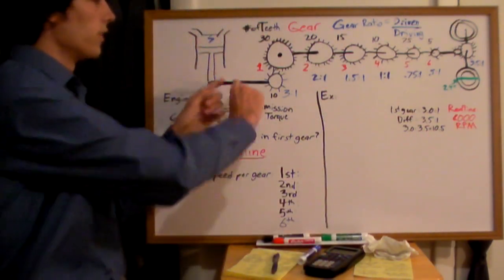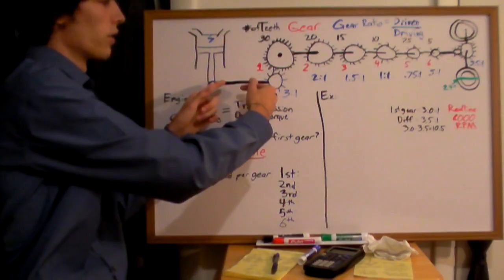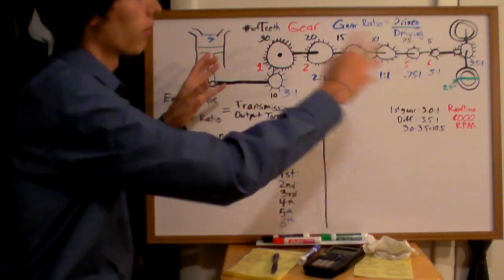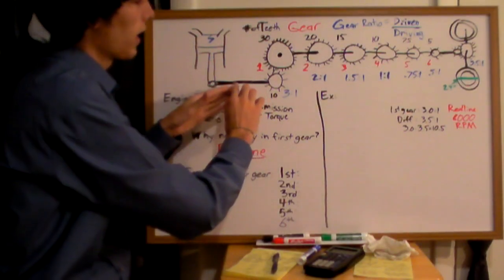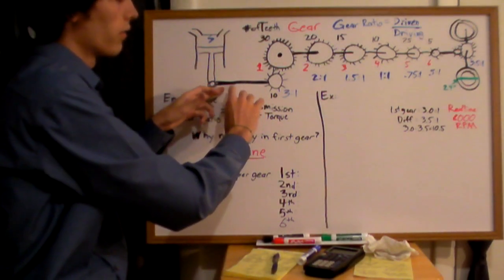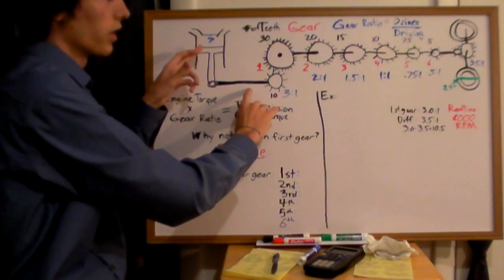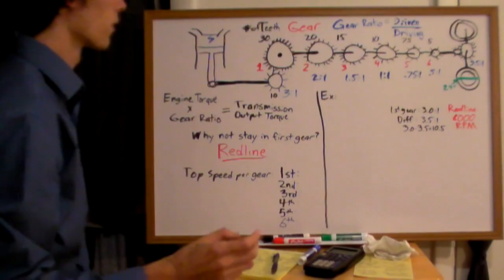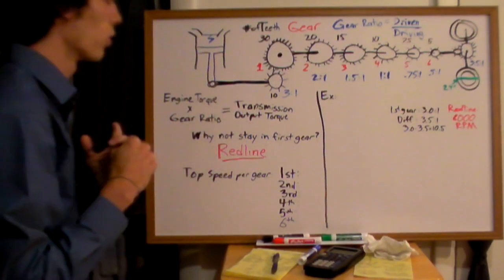What that means is, every rotation of your crankshaft in your engine will give you about 1 tenth of a revolution. It's going to take 10.5 revolutions of your crankshaft from your engine to get the tire to rotate one time. Alright. So that's basically how gears work.